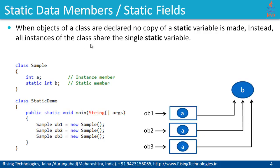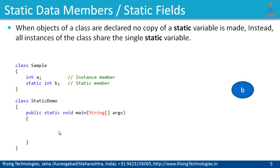When objects of a class are declared, no separate copy of the static variable is made. Instead, all instances share the single static member. In simple words, instance members belong to specific instances — they are instance-dependent. Whereas static members do not belong to a specific instance — they are instance-independent. If I remove all instance declarations, there is no existence of 'a', but 'b' is still there. So 'b' depends on the class only, not instances. That's why static members are also called class members, whereas non-static members are instance or object members.